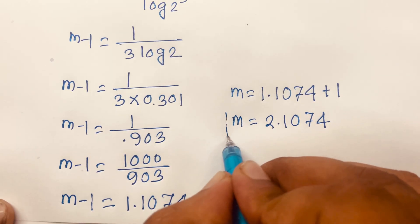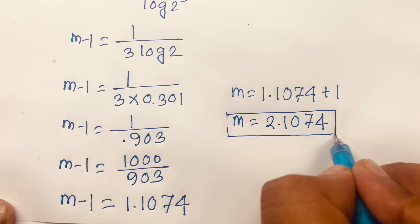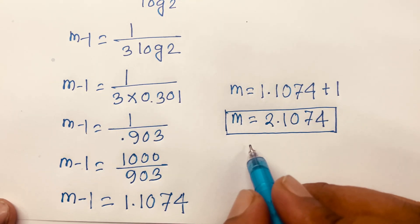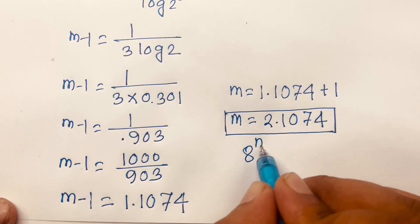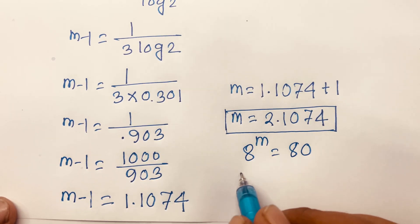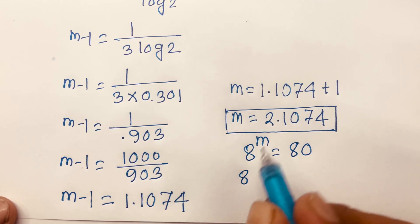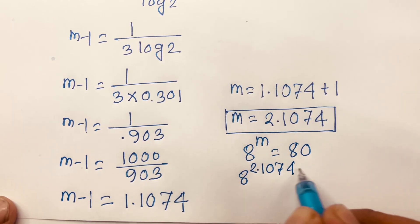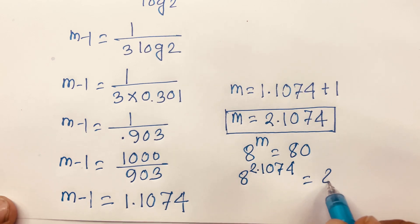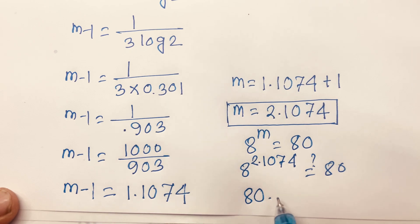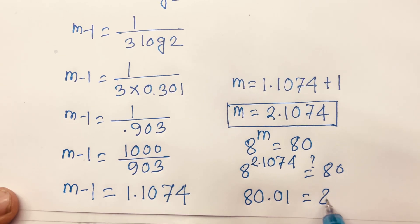This is our final answer. Let's verify: our original equation is 8 power m is equal to 80. Substituting m equals 2.1074, we get 8 power 2.1074 is equal to approximately 80.01, which is equal to 80. Verified.